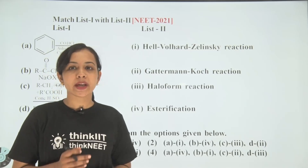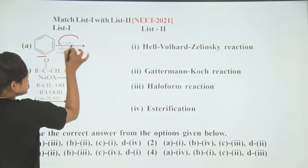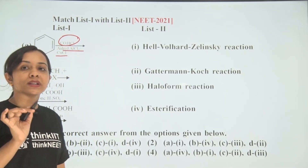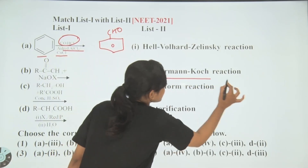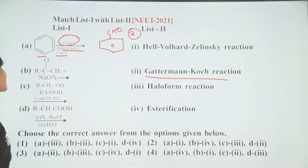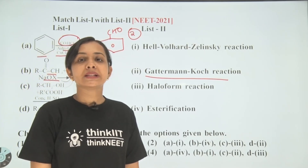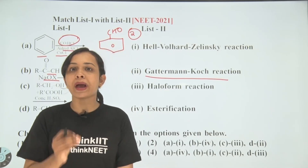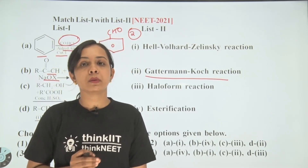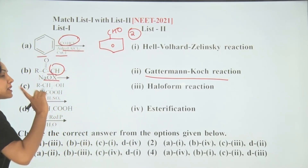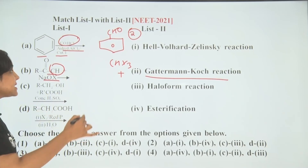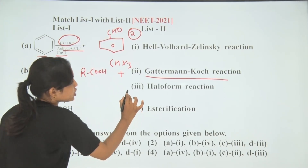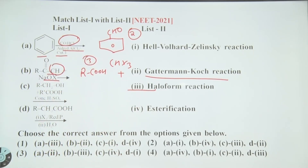The next question asks us to match list 1 with list 2. First, benzene reacts with COHCl in the presence of anhydrous AlCl₃ to form benzaldehyde. This name reaction is known as the Gattermann-Koch reaction, so it is matched with option 2. Next, a compound containing a methyl ketone group reacts with NaOX — this is the haloform reaction, where the methyl group is converted into a precipitate CHX₃ and the keto group is oxidized to an acid. The haloform reaction matches with option 3.